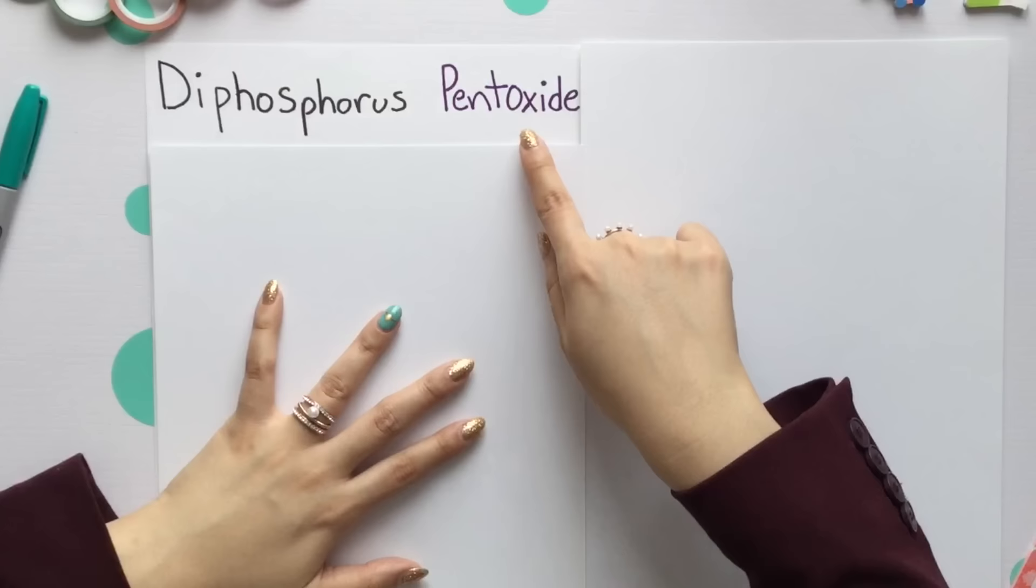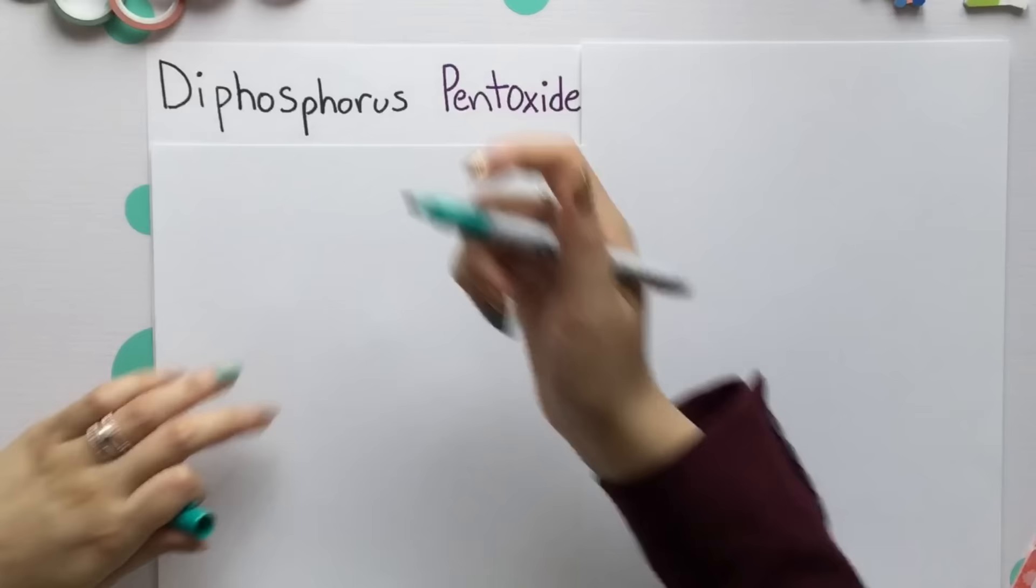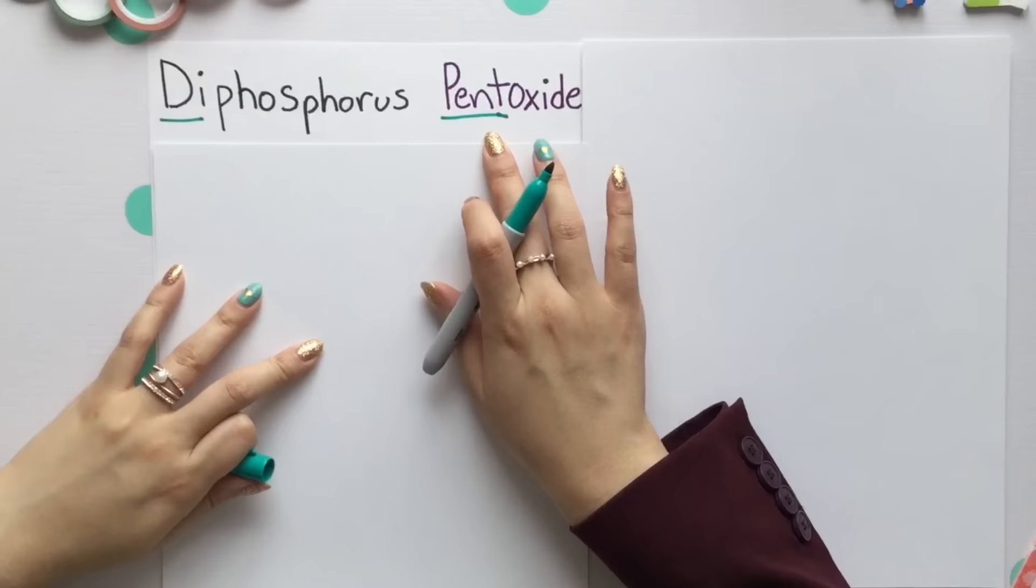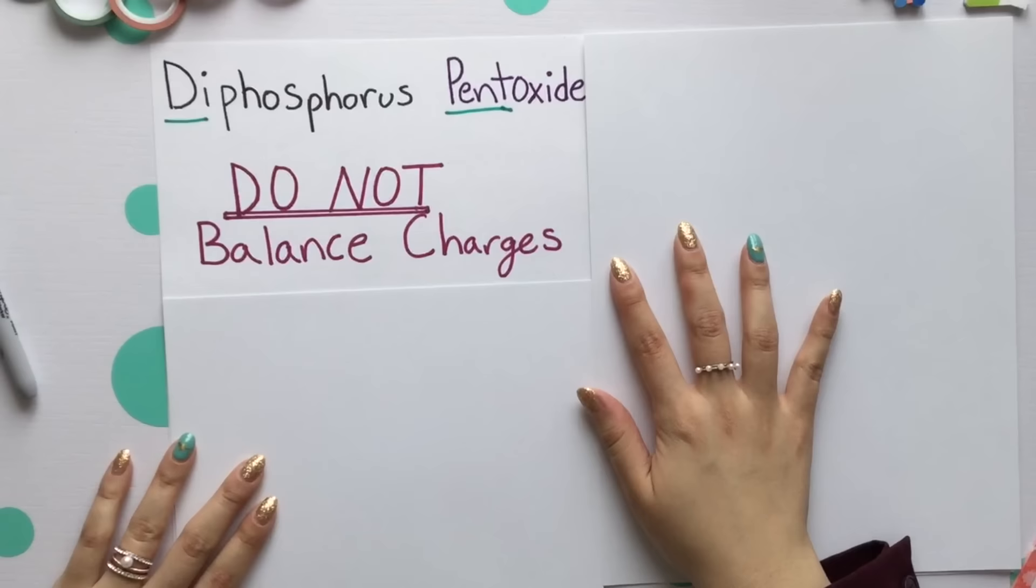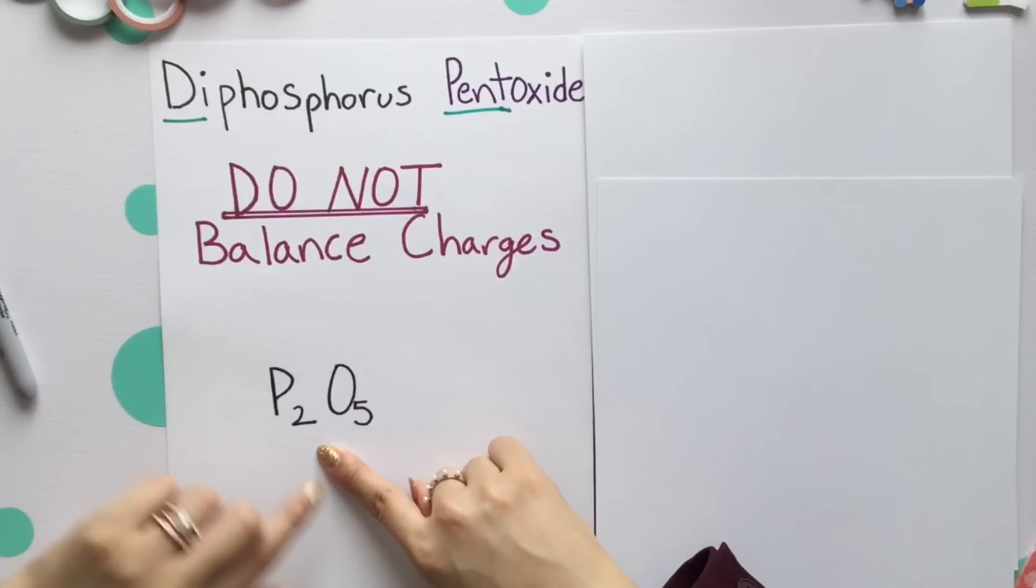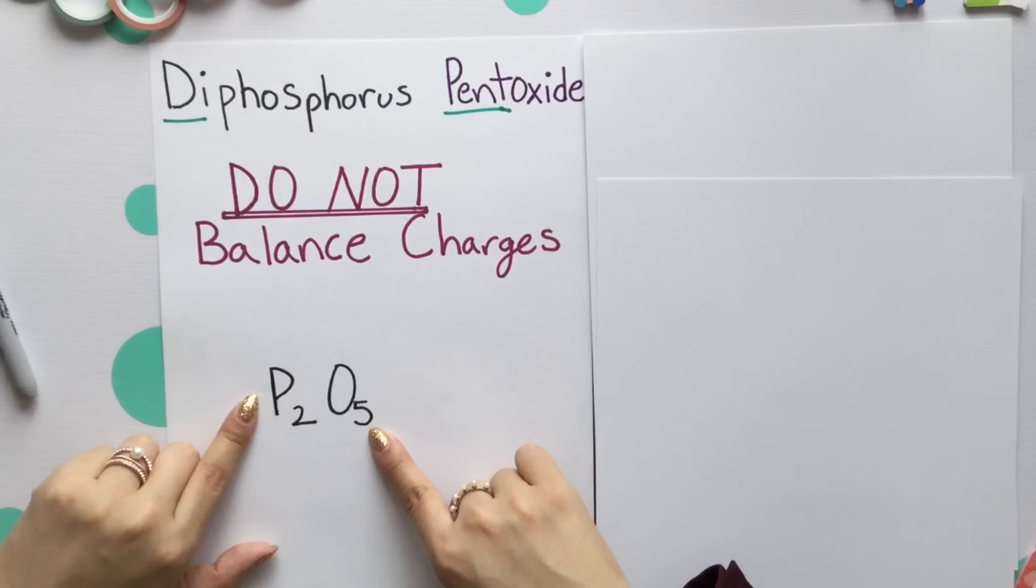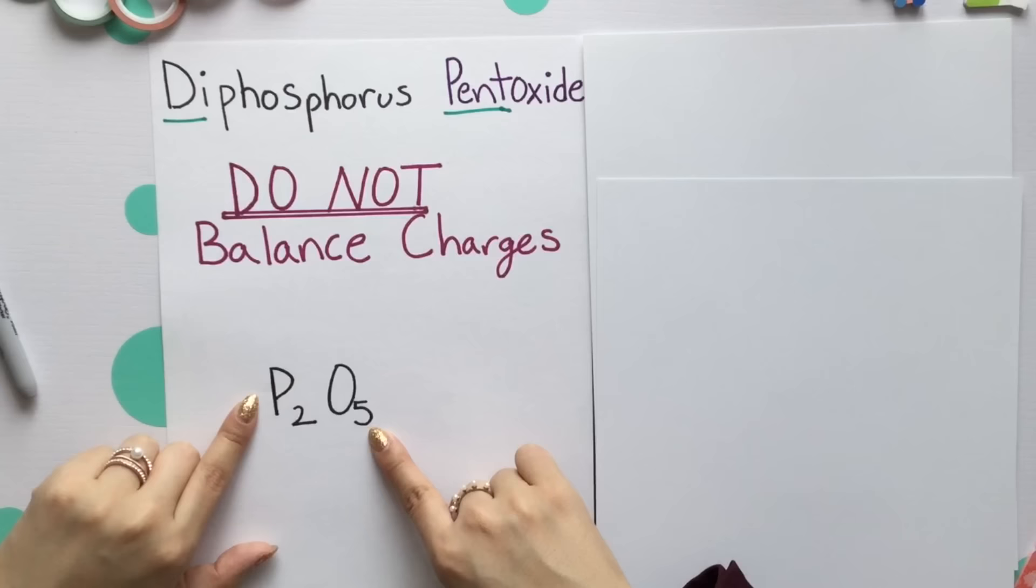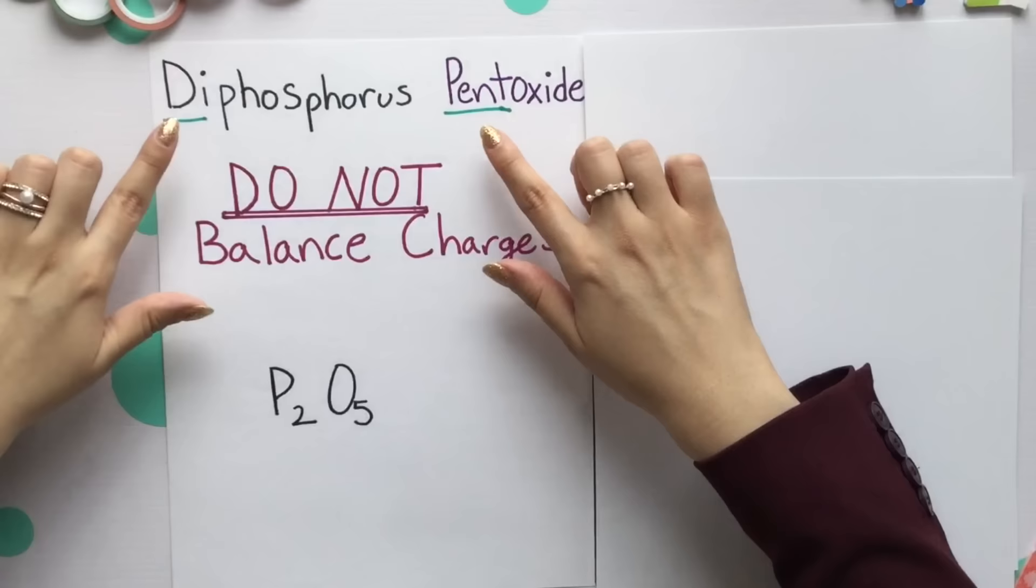Covalent compounds consist of 2 non-metals. The setup will be a prefix plus the name of your non-metal, then another prefix plus the name of your non-metal ending in ide. Diphosphorus pentoxide. Our subscript is that di and pent. Di meaning 2 and pent meaning 5. We do not have to balance any charges. The di means 2, so there are 2 phosphorus. The pent means 5, so there is 5 oxygen. Your prefixes literally tell you how much of that element there is.